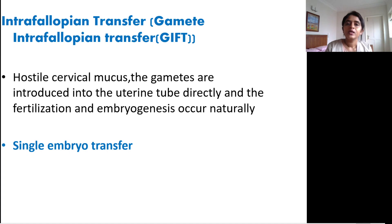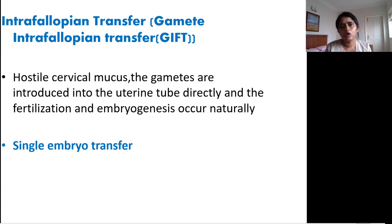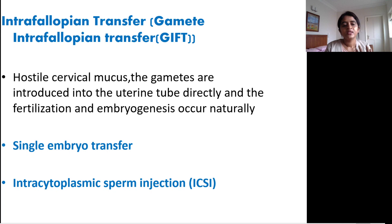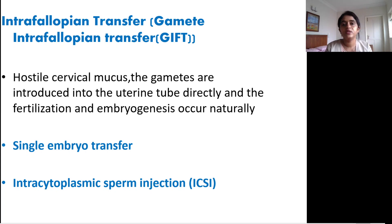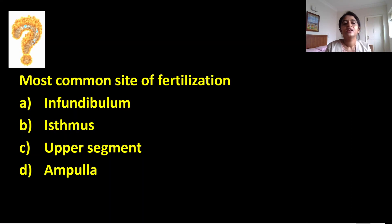Single Embryo Transfer (SET) is used when the embryo is cultured a bit longer, reducing the chance of rejection, allowing transfer of just one embryo. Intracytoplasmic Sperm Injection (ICSI) is used when sperm motility is hindered — a single sperm is taken and injected directly into the cytoplasm of the oocyte.